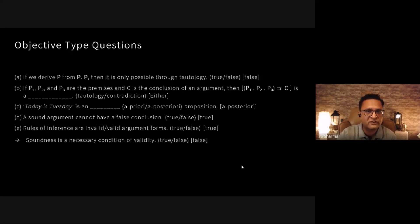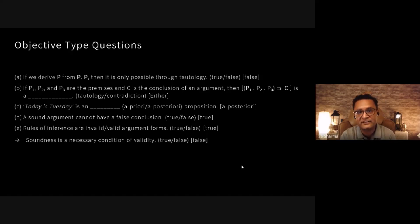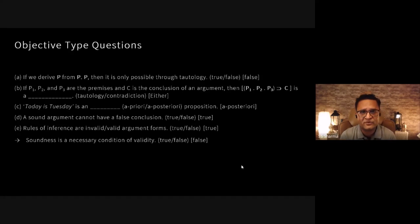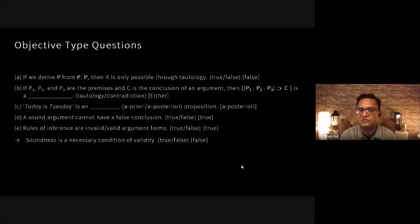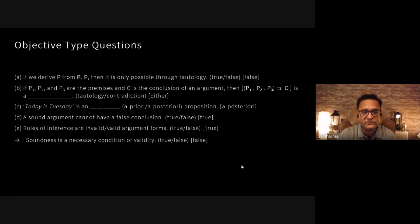This was a giveaway question. Since the question did not specify whether the argument is valid or invalid, both answers are acceptable. The next question was: 'Today is Tuesday' — is it an a priori or a posteriori proposition? It is an a posteriori proposition because it is a contingently true statement. It is true today but will be false the next day, so 'Today is Tuesday' is definitely a posteriori.